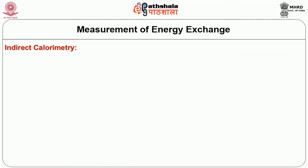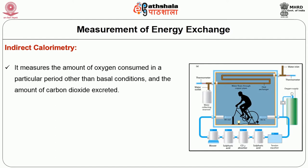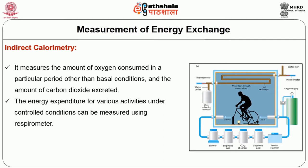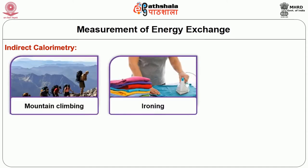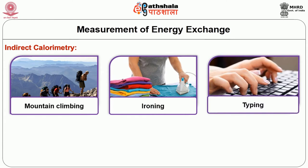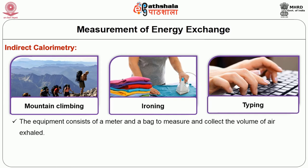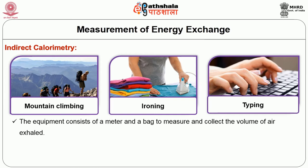Indirect calorimetry measures the amount of oxygen consumed in a particular period and the amount of carbon dioxide excreted. The energy expenditure for various activities under controlled conditions can be measured using a respirometer. The subject is allowed to walk on a treadmill or ride a bicycle; other activities include mountain climbing, ironing, typing, where portable respirometers are employed. The equipment consists of a meter and a bag to measure and collect exhaled air, from which calorie equivalence can be calculated. The respirometer is light in weight and easy to carry.